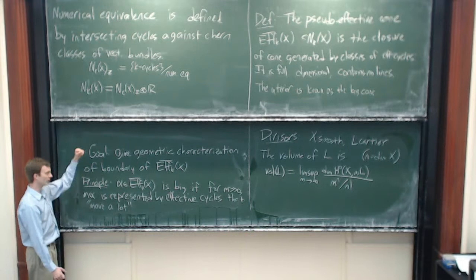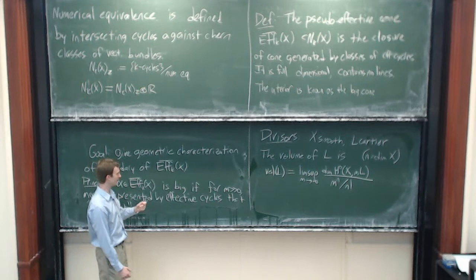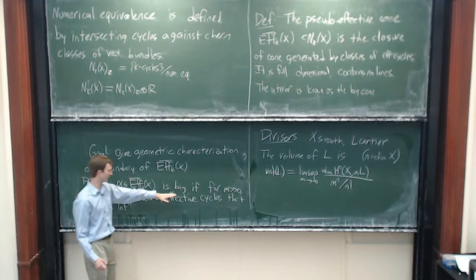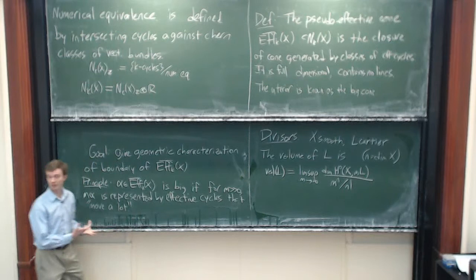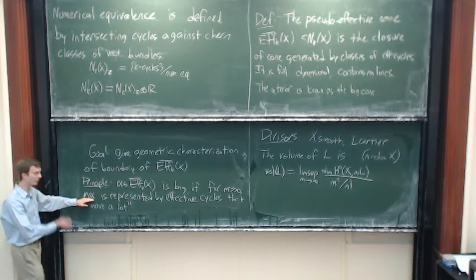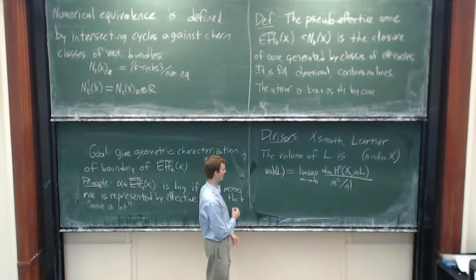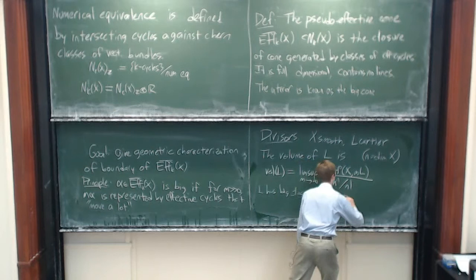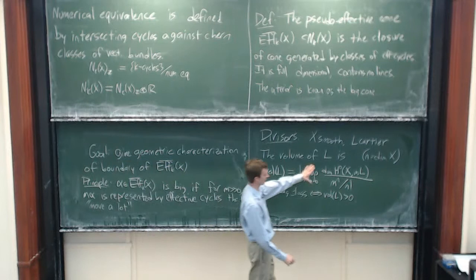The dimension of the space of sections measures how much L moves in the linear series. But bigness is not captured just by the space of sections — you need to look at multiples of L and measure their asymptotic growth as m increases. This picks off the coefficient of m^n in the growth rate. By this principle, the geometry of L itself might not reflect its bigness — you need to look at high multiples. Bigness is a cone-type question, invariant of the ray, so you need to look at the entire ray. It turns out L has big class precisely when the volume of L is positive.